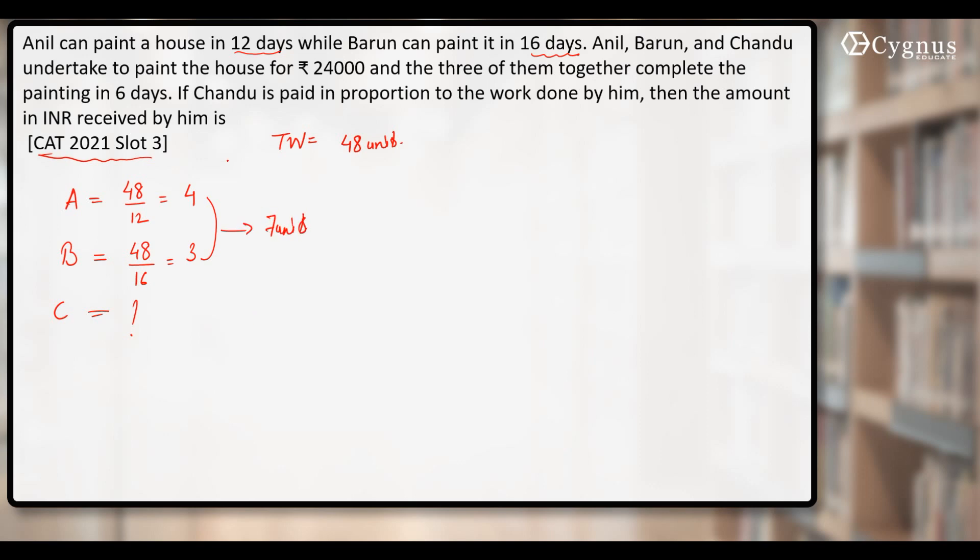The last line says that all three of them have worked for 6 days to finish the whole work. In these 6 days, what is the work done by Anil and Barun together? Which is 7 into 6, that is 42 units.